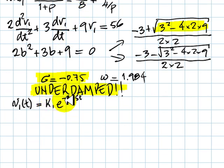K1, e to the negative 0.75 t, sine, omega t, 1.984 t, another constant, and a final value.